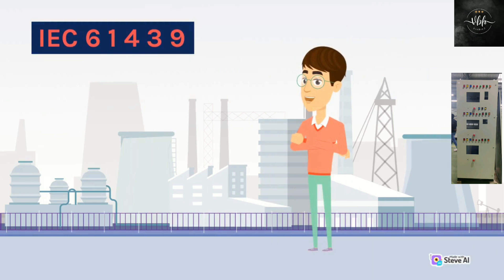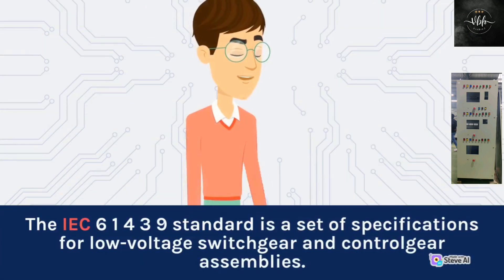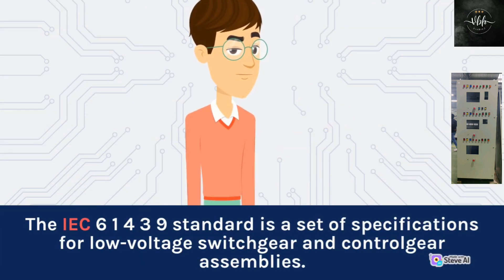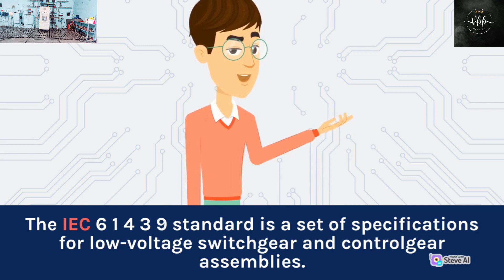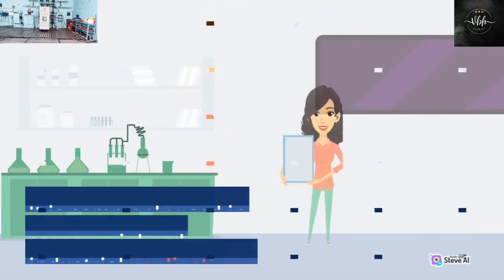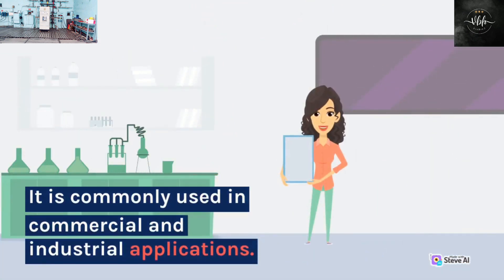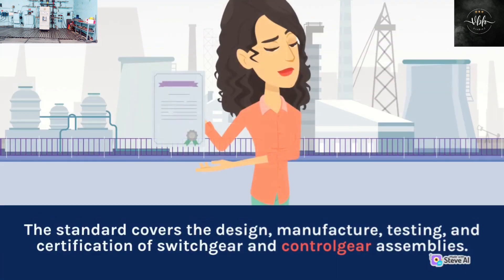IEC 61439. The IEC 61439 standard is a set of specifications for low-voltage switchgear and control gear assemblies. It is commonly used in commercial and industrial applications. The standard covers the design, manufacture, testing, and certification of switchgear and control gear assemblies.